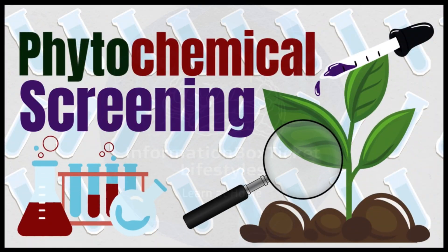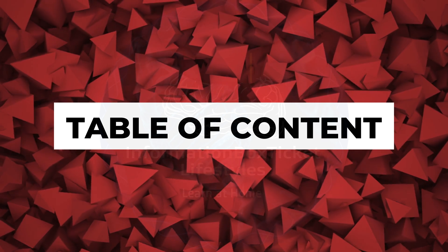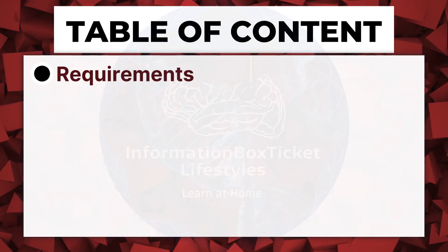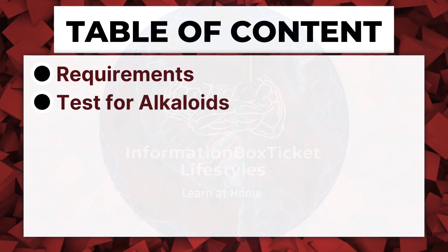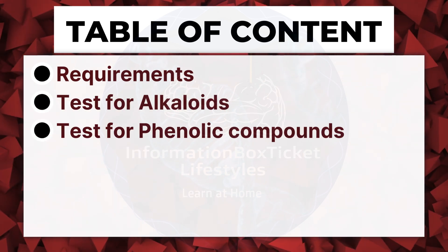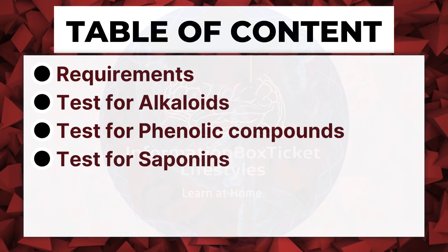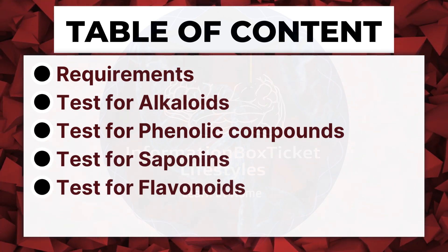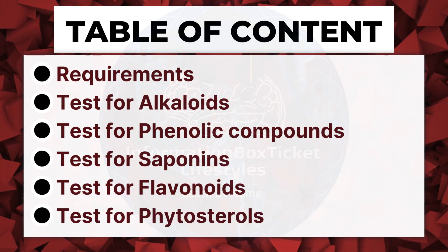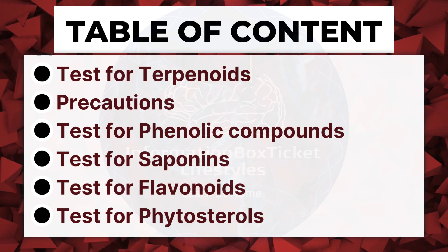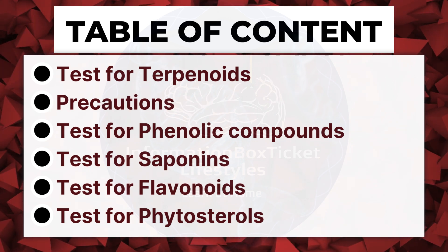Phytochemical Screening Explained: Step-by-Step Guide. Table of Contents: Requirements for Phytochemical Screening, Test for Alkaloids, Test for Phenolic Compounds, Test for Saponins, Test for Flavonoids, Test for Phytosterols, Test for Terpenoids, and Precautions During Phytochemical Screening.